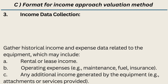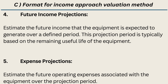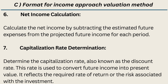Step 3: Income Data Collection — gather historical income and expense data including: (a) rental or lease income, (b) operating expenses such as maintenance, fuel, and insurance, (c) any additional income generated by the equipment. Step 4: Future Income Projections — estimate the future income the equipment is expected to generate over a defined period, typically based on its remaining useful life. Step 5: Expense Projections — estimate future operating expenses over the projection period.